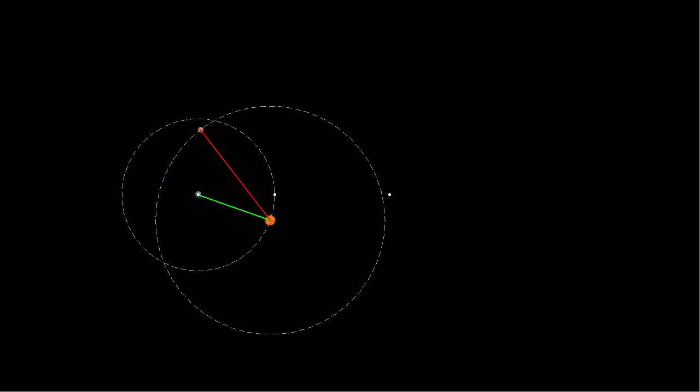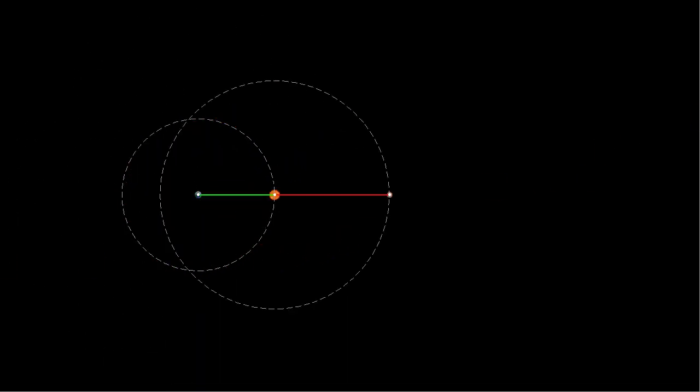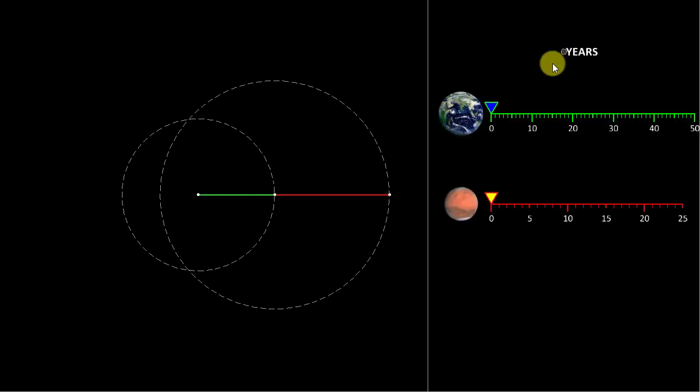Now, let us plot the path, the path of Mars and while we do so, let us also keep track of the time. Here we are going to show the years in terms of earth years and Mars years.